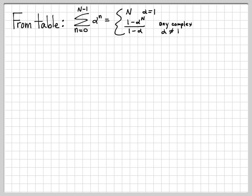So how are we going to solve this? Well, we need to know something else. If we go look at our table, we have a table of closed form summations. One of the ones that we use and will use quite a bit is this. The sum from n equals 0 to capital N minus 1, α^n is equal to N when α is 1, or it's equal to (1-α^N)/(1-α) for any other complex α.